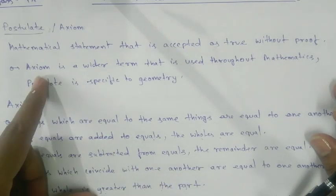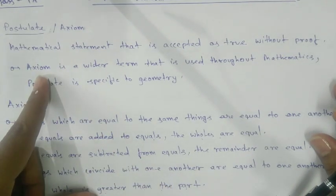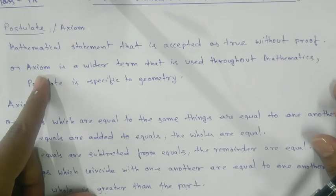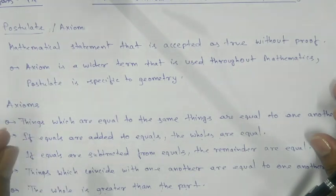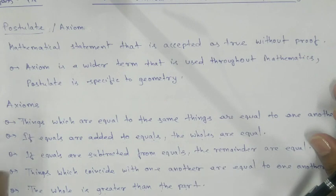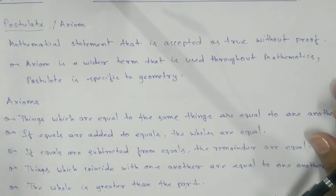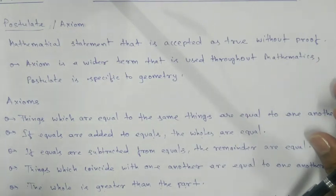There is a little difference between axioms and postulates. Axiom is a wider, broader term used throughout mathematics. The axioms which are used especially in geometry have a special name called postulates. There are five postulates in our syllabus and we will discuss all of them.